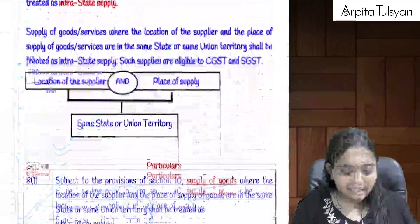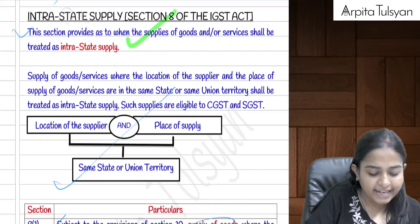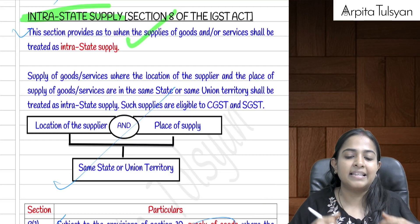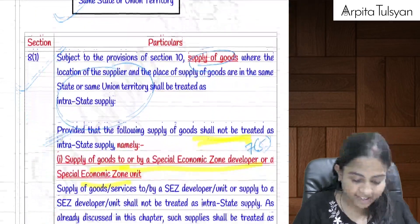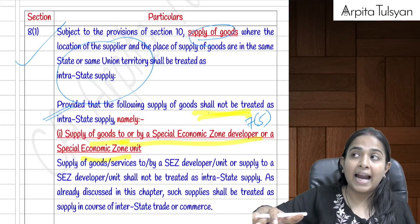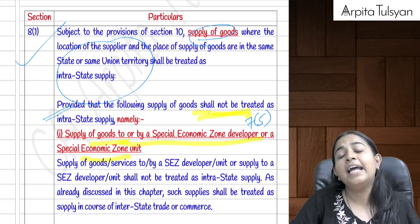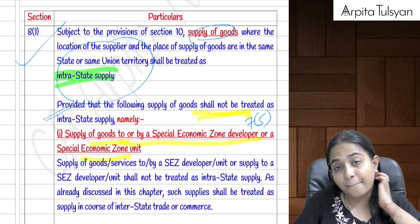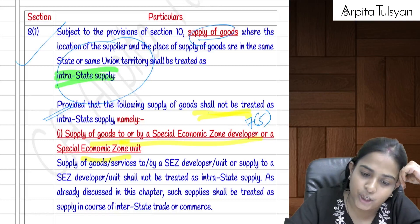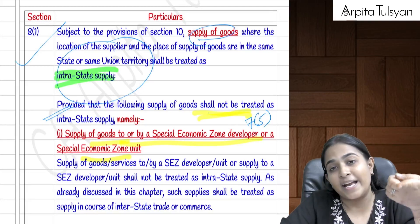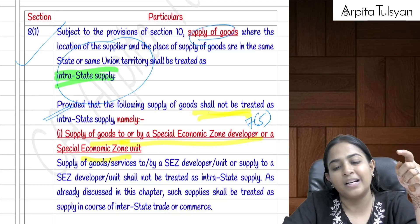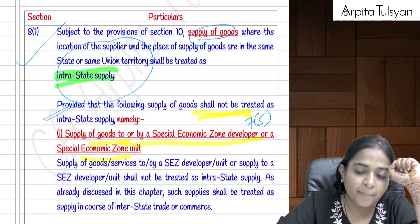Section 8 covers intrastate supply. Section 8(1) states that supply of goods where both the location of the supplier and place of supply are in the same state or union territory is intrastate supply. However, three exceptions apply and will never be intrastate: supply to/from SEZ (treated as interstate under Section 7), imported goods until they cross customs frontiers, and supply of goods to a foreign tourist.